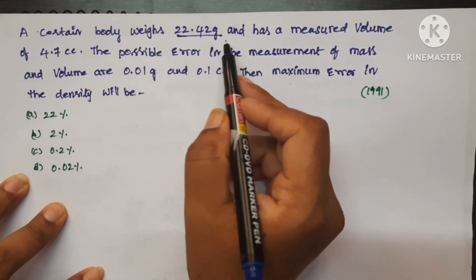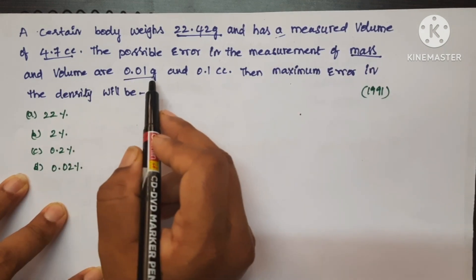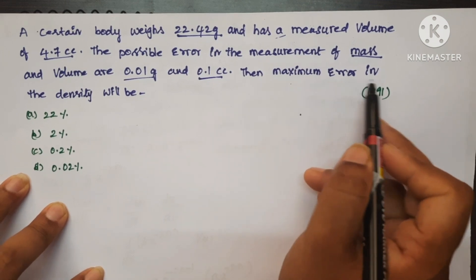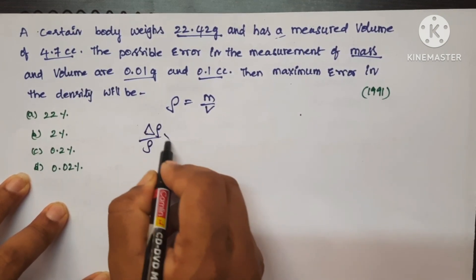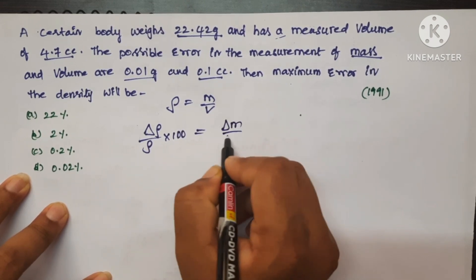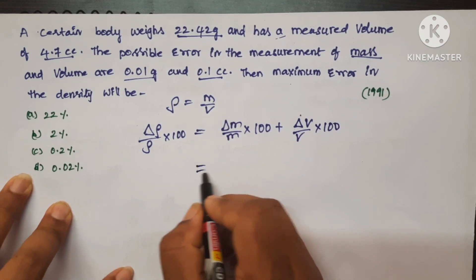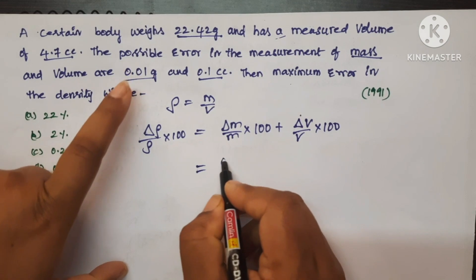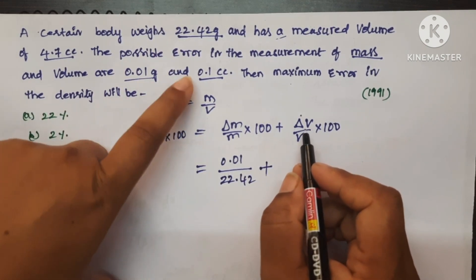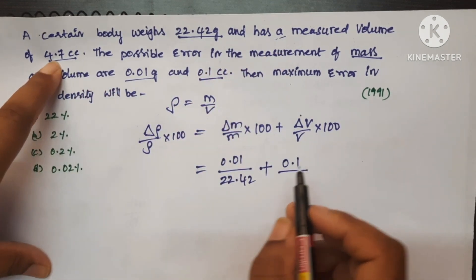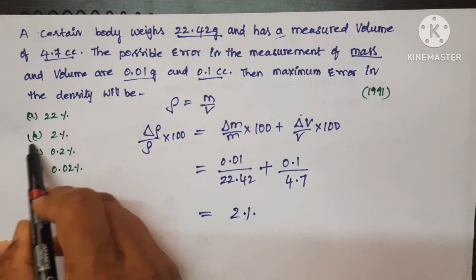Next question: A certain body weighs 22.42 grams and has a measured volume of 4.7 cc. The possible error in the measurement of mass and volume are 0.01 gram and 0.1 cubic centimeter. Then maximum error in the density: (Δρ/ρ) × 100 = (0.01/22.42) × 100 + (0.1/4.7) × 100. On calculating you get 2%. Option B is the correct answer.